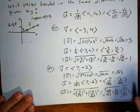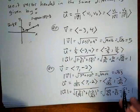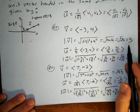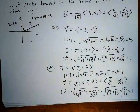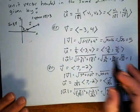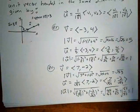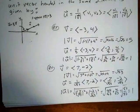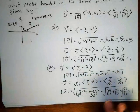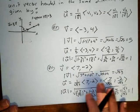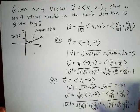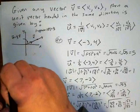Usually you're going to get a radical like that in the second example. There are vectors that give whole-number magnitudes — those are the Pythagorean triples, right triangles where all three sides are whole numbers, and there are an infinite number of them. But for any random vector, you'll typically have a radical.